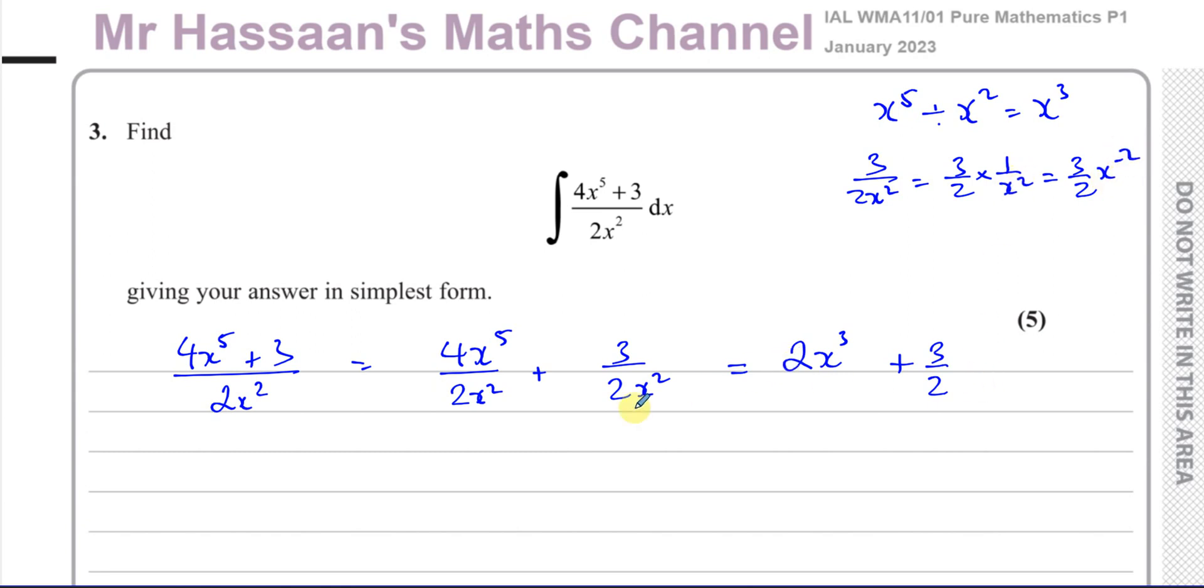The power which is in the denominator is written in the numerator with a negative power. That's from our understanding that 1 over x to the power of n is the same as x to the power of minus n, which is reciprocal.